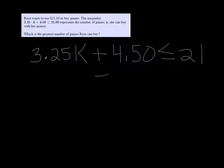Well, let's try to solve it. 3.25k plus 4.50 is less than or equal to 21. We'll start by subtracting 4.50 on both sides.